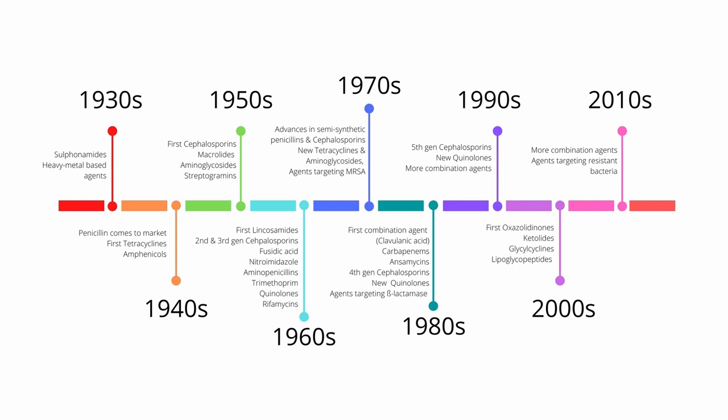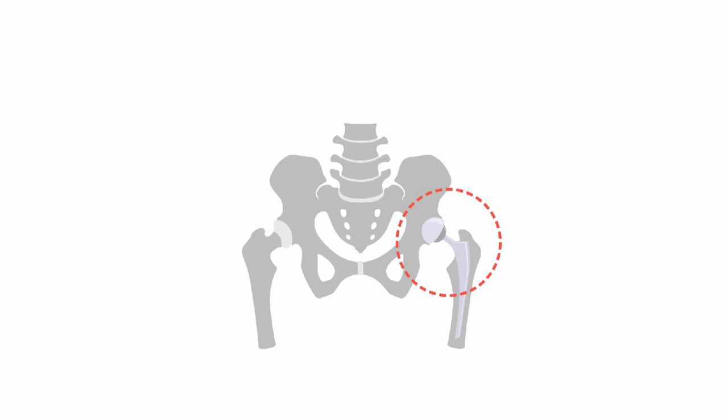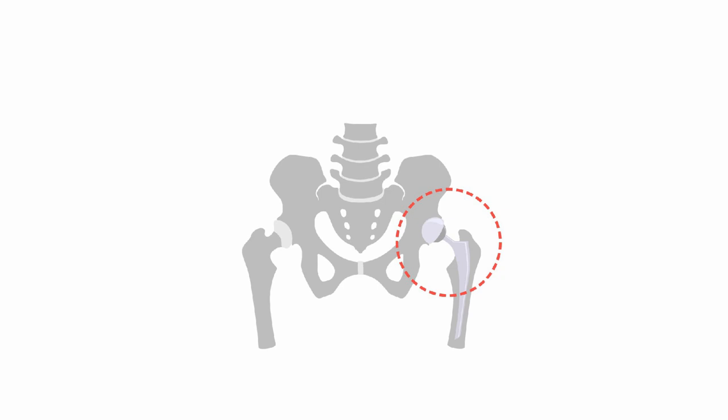A golden age of antibiotic discoveries from the 1940s through the 1980s led to the discovery of all of the major classes that we use today. An effective pool of antibiotics enabled advances in health care, such as hip replacement surgery and cancer chemotherapy, both commonly performed in veterinary practice today.